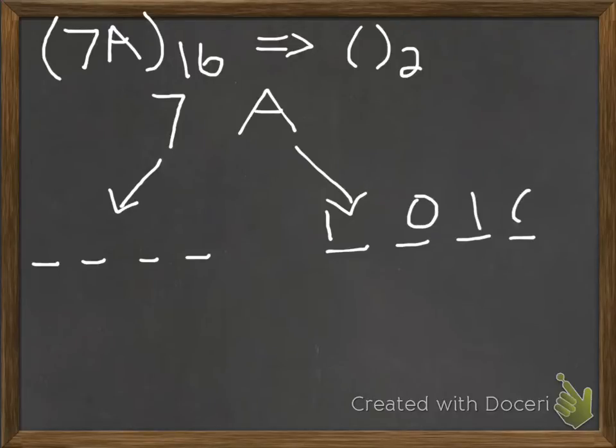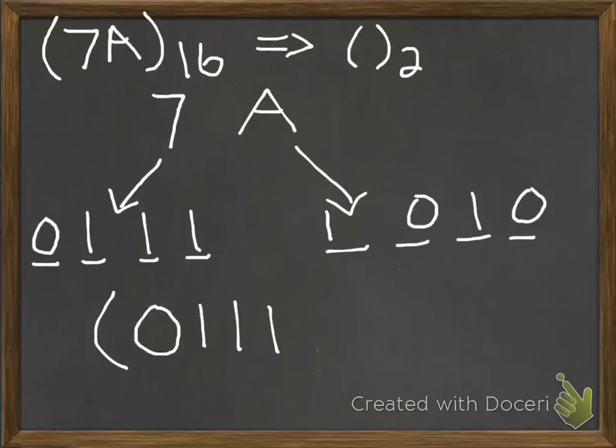Now we just got to do the same for 7. So 7 in binary is 0111. This will be, if you rewrite this out and combine it together, the binary representation of 7A base 16.